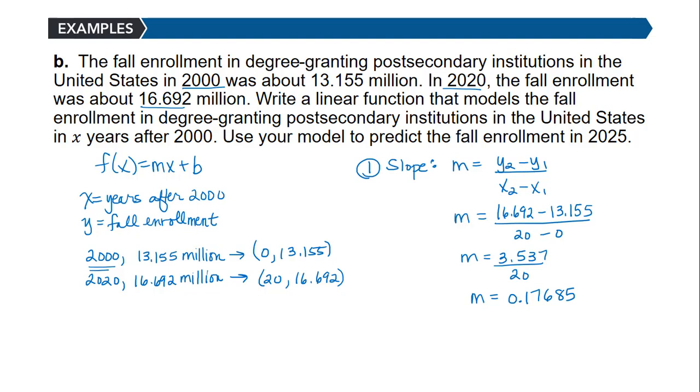Now we can find the equation. The thing I want you to recognize is that we know the slope now, and we actually know the b value, because the b value is the y value when x is 0. Therefore our equation is f(x) = 0.17685x + 13.155. If you didn't notice the b value, you could plug into point-slope form and get this function.